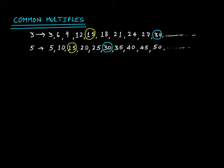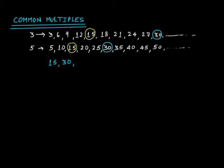So of the first ten multiples, 15 and 30 are common in these two cases. The two common multiples — just for the first ten multiples — are 15 and 30. What would be the next common multiple after 30?